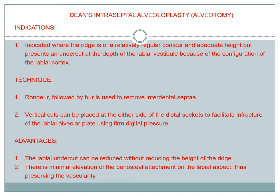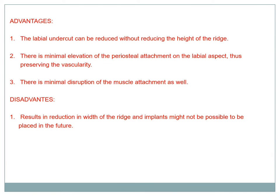Next is Dean's Intraseptal Alveoloplasty procedure, also called alveolotomy, where we are removing the bone. It is normally indicated where the ridge has an irregular contour and adequate height but presents undercuts at the depth of the labial crest because of the prominent labial cortex. The technique uses mainly a burr, bone rongeur, and chisel. Vertical cuts are placed at the mesial and distal socket of the tooth, fracturing the labial alveolar plate using digital pressure. The main advantage is that labial undercuts can be reduced with minimum elevation of the periosteum. The main disadvantage is reduction of the width of the ridge, making implant placement not possible with this type of procedure.